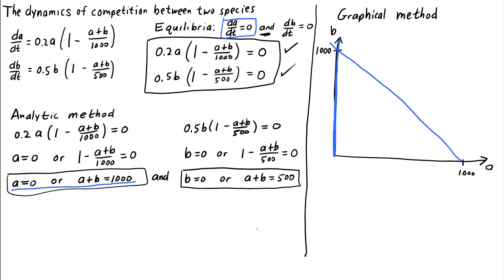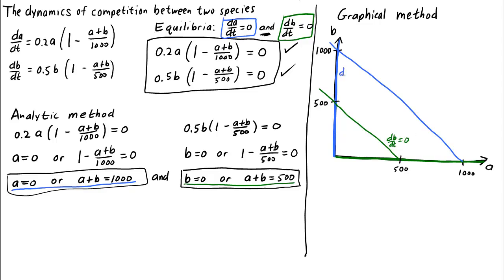Having dA/dt equals zero isn't enough for a point to be in equilibrium. We also need dB/dt equals zero. An equilibrium must simultaneously solve both conditions. To satisfy dB/dt equals zero, either B must equal zero (the A-axis) or A plus B must equal 500, which is a line through (500,0) and (0,500) with slope negative 1. We'll plot points satisfying this condition in green. Our equilibria must lie along both the blue curve and the green curve, so we must look for intersections.